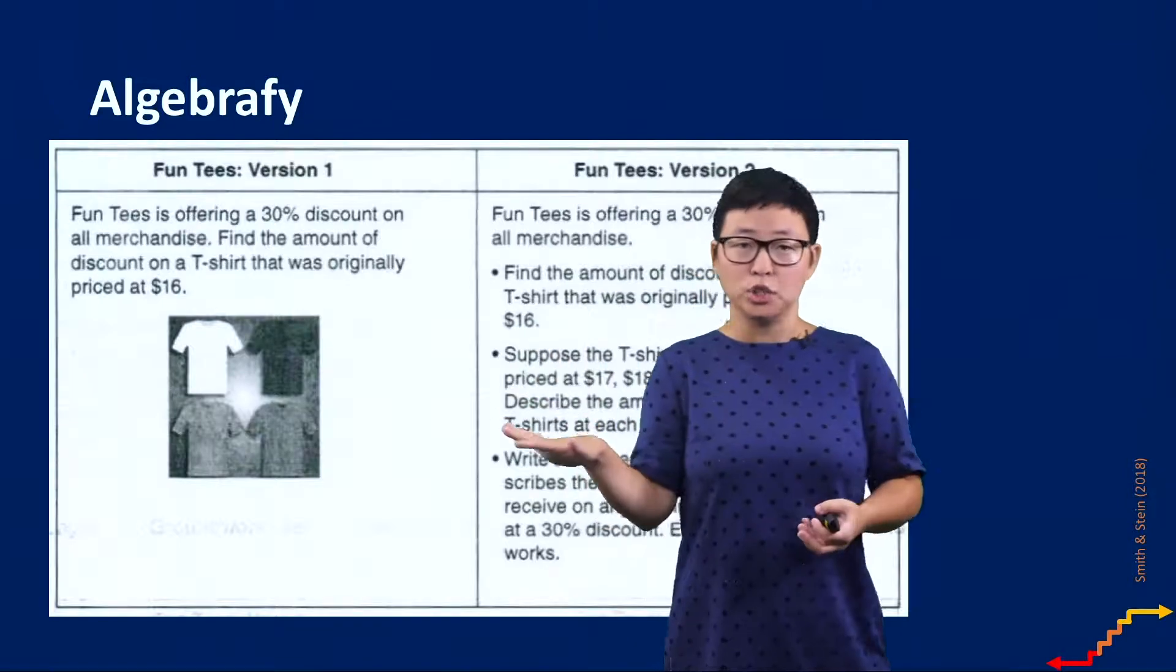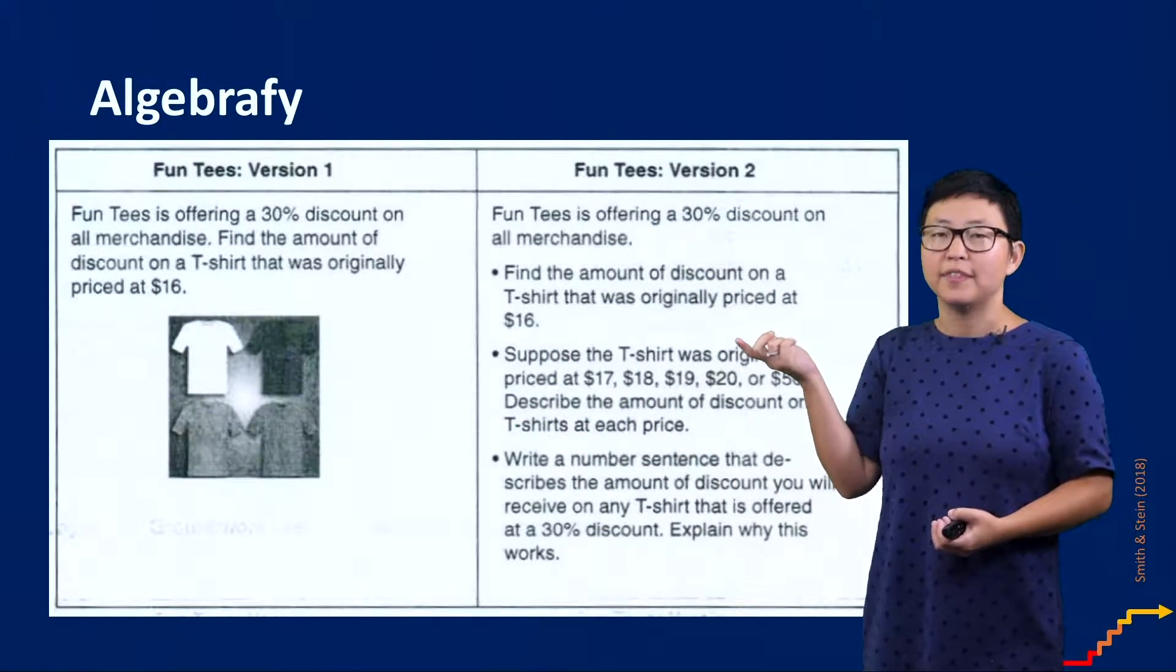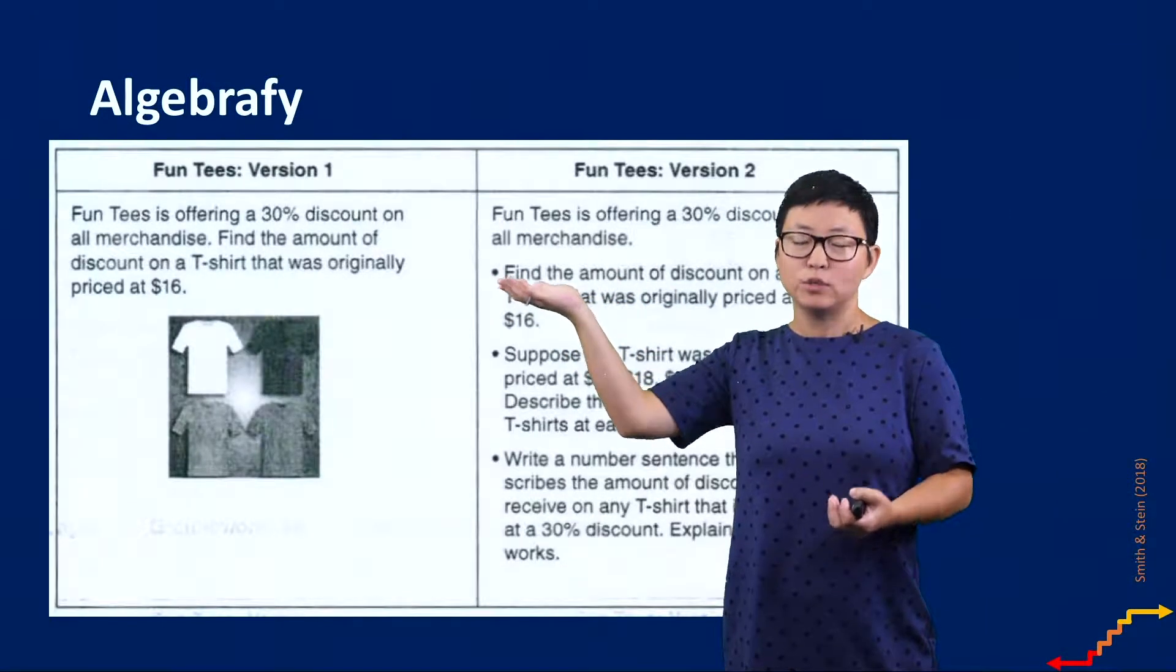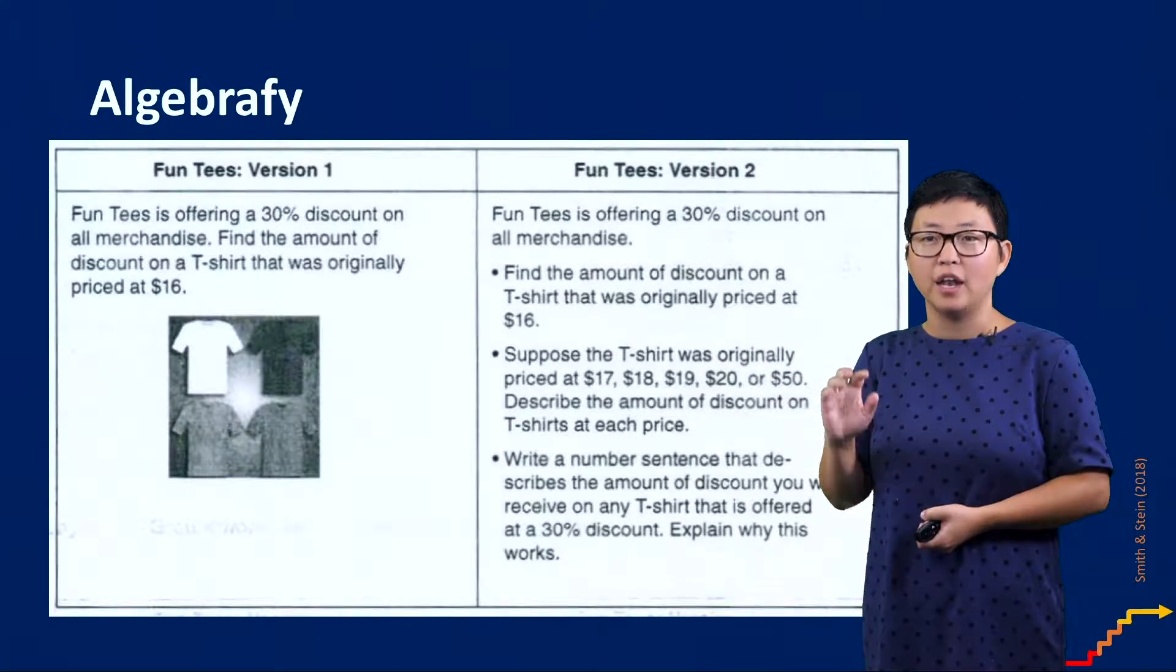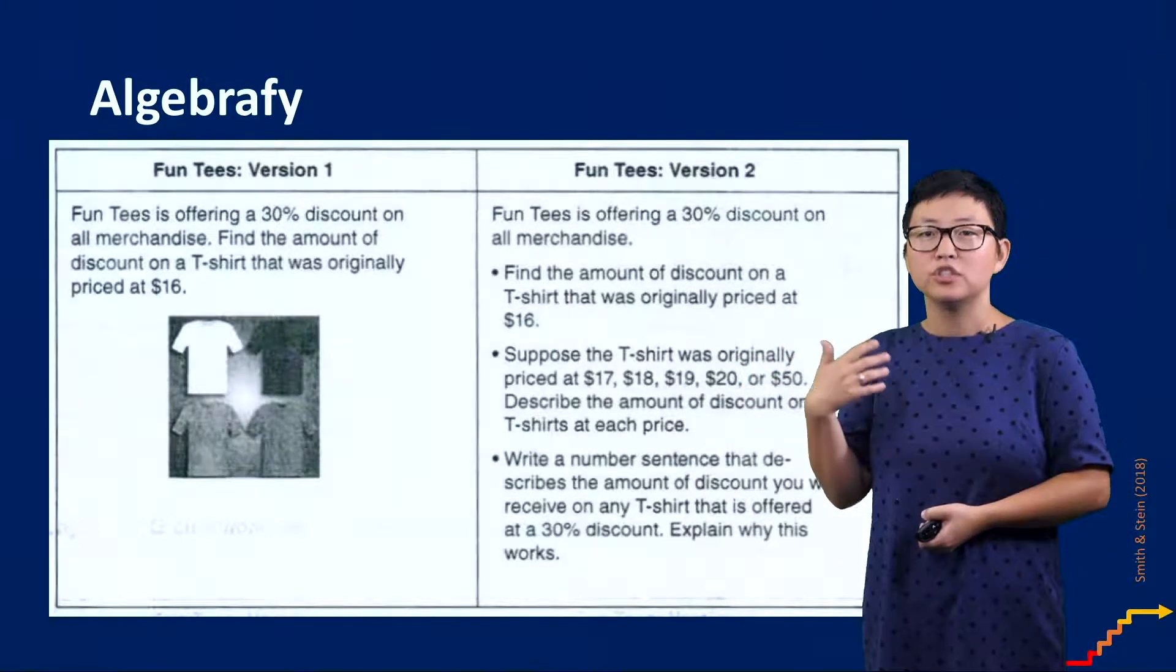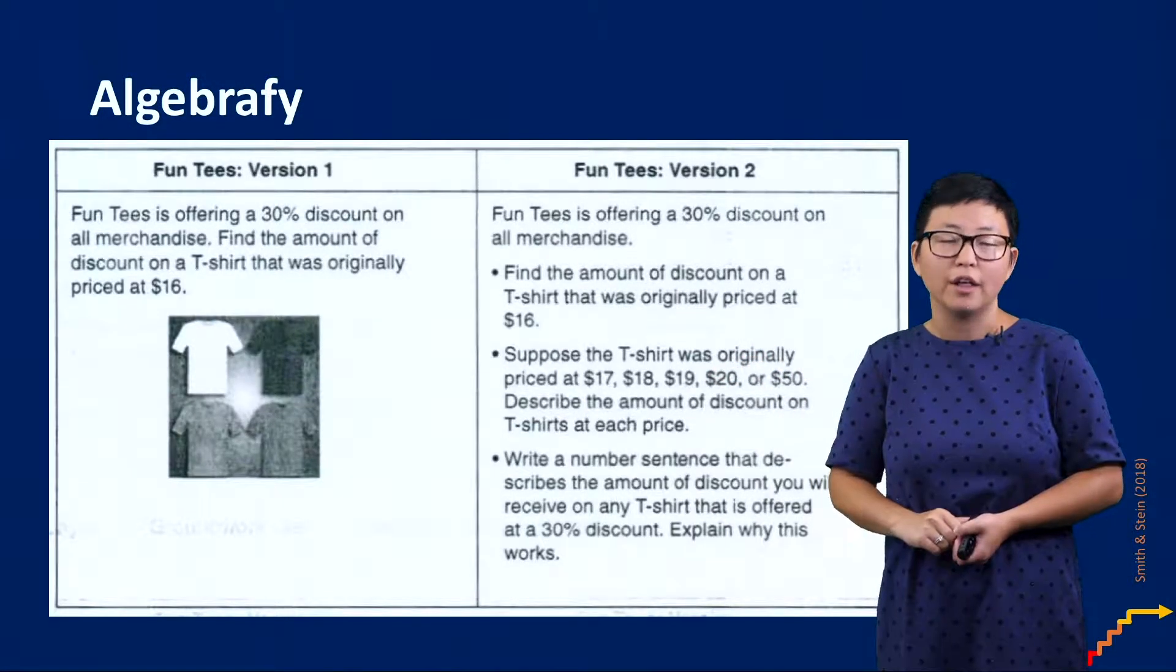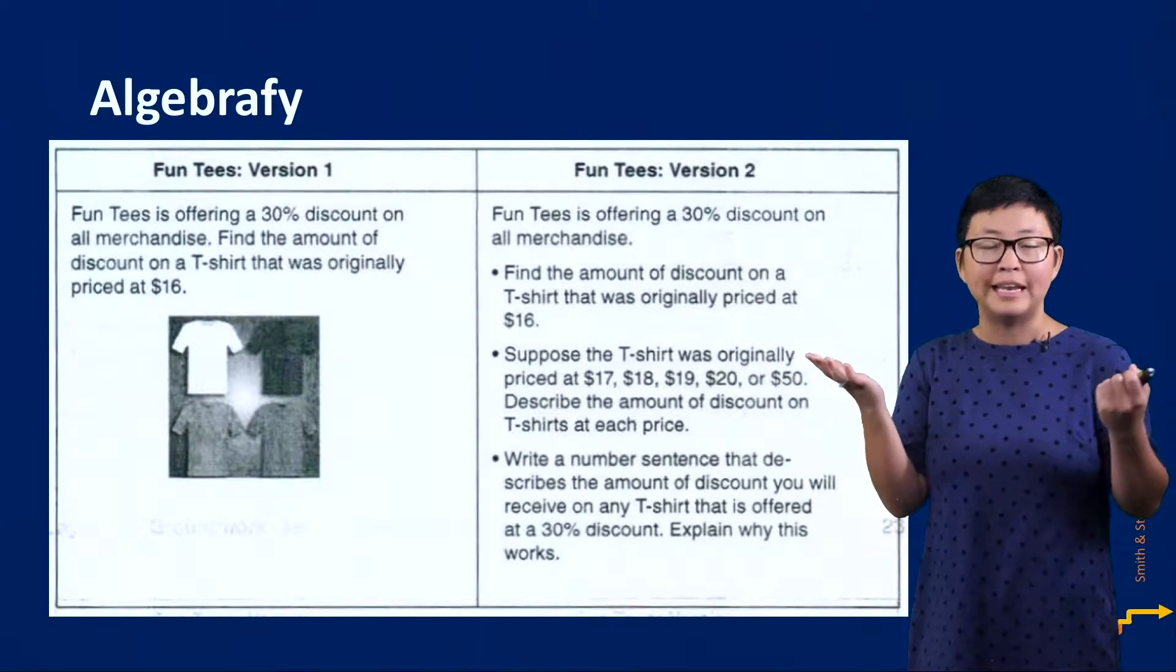The next thing you can do is to algebrafy your problem, and here's a great example that comes from Smith and Stein. So on the left, you see this example about Fun Tees, which is a t-shirt company, and this problem is about calculating percent discount and then ultimately asking: Find the amount of discount on a t-shirt that was originally priced at $16. That's a pretty standard task that we would expect to see in any sort of curriculum.